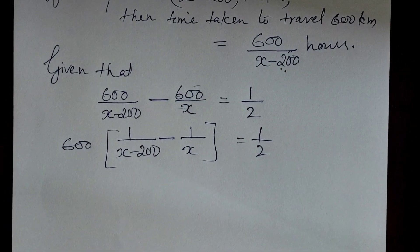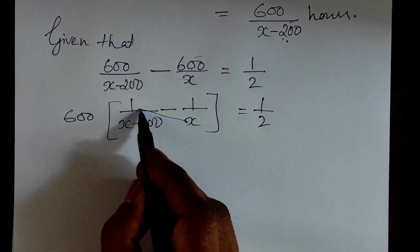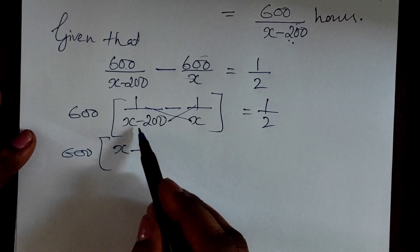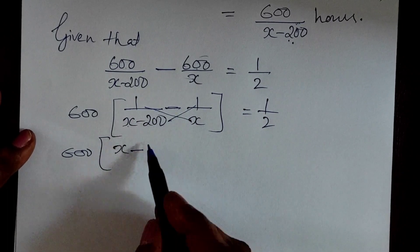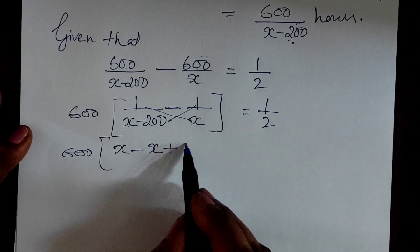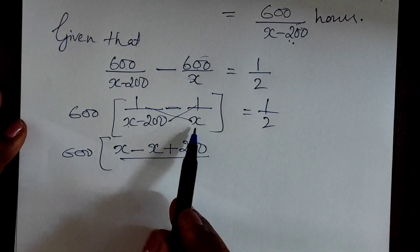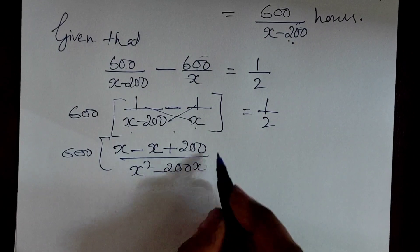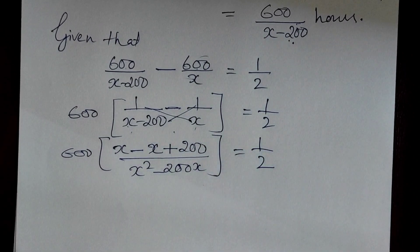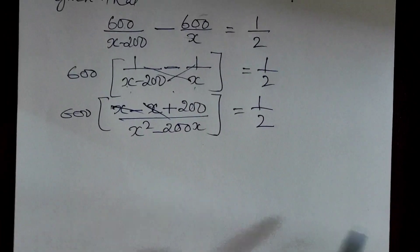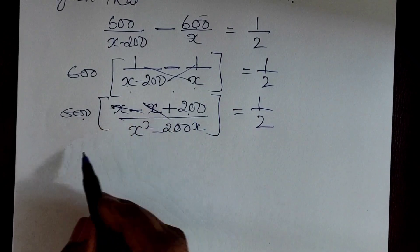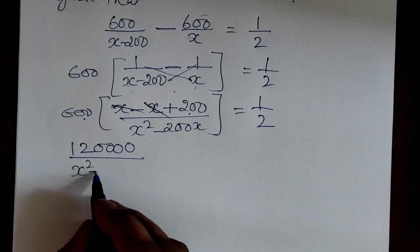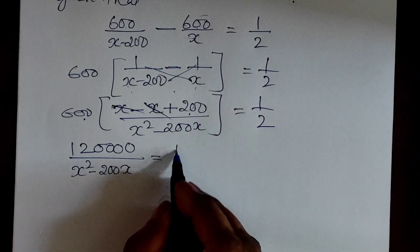Cross multiplying, we get 1/(x-200) minus 1/x simplified gives 200 divided by [x times (x minus 200)] equals 1/2. So, 600 times 200 divided by [x(x-200)] equals 1/2. That gives us 600 times 200 equals 120,000, and then 2 times 120,000 equals 240,000 divided by x squared minus 200x equals 1/2.